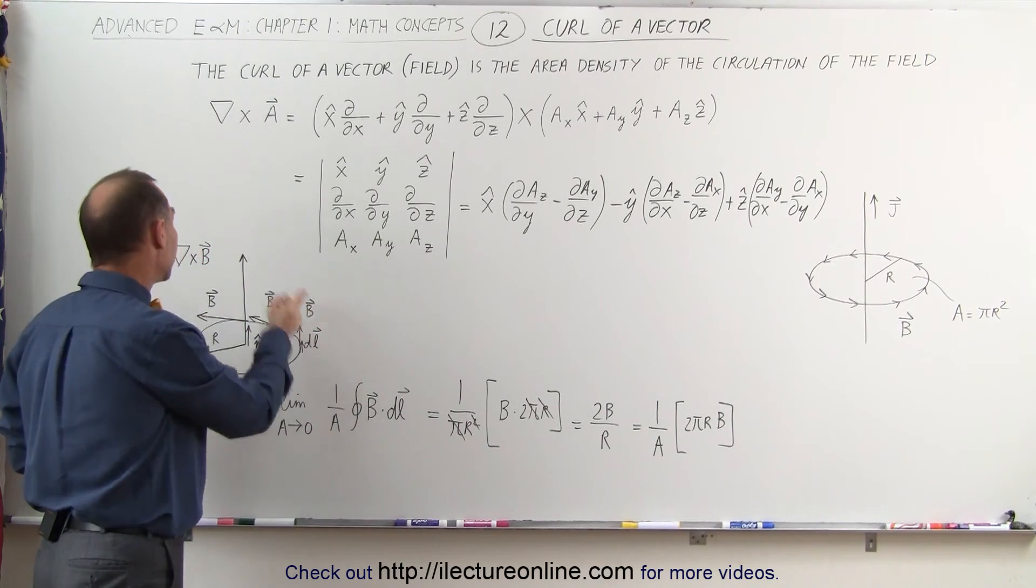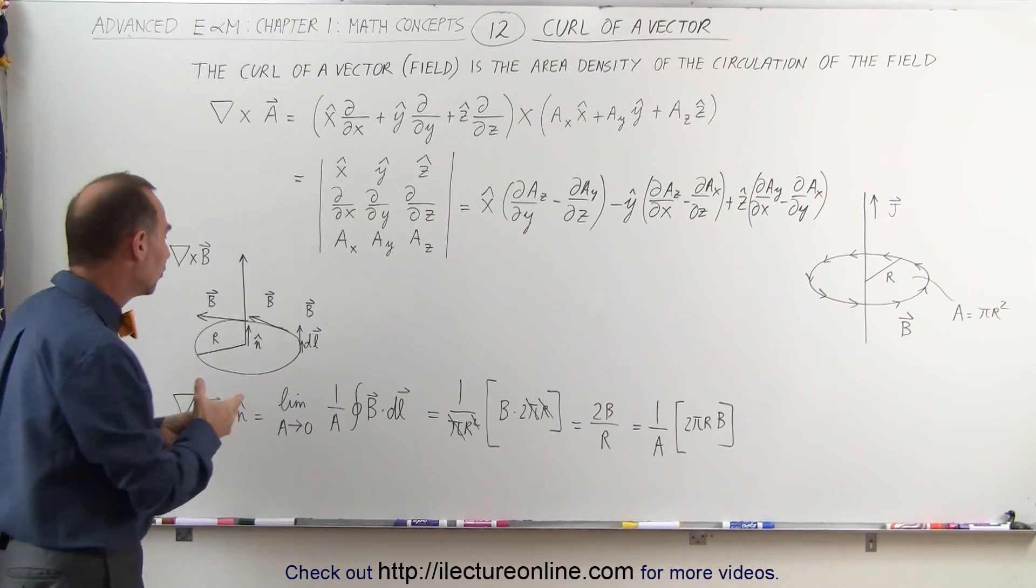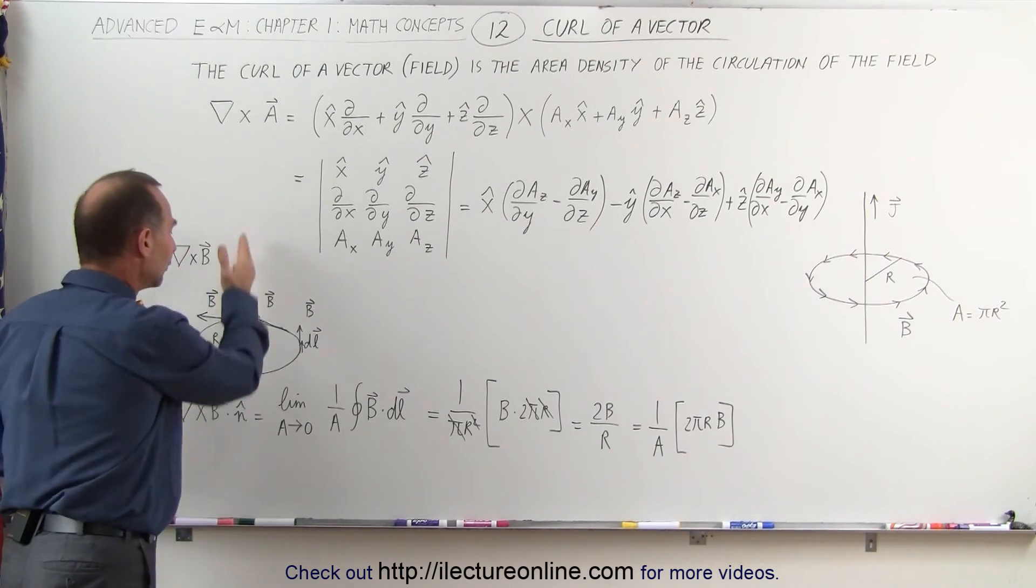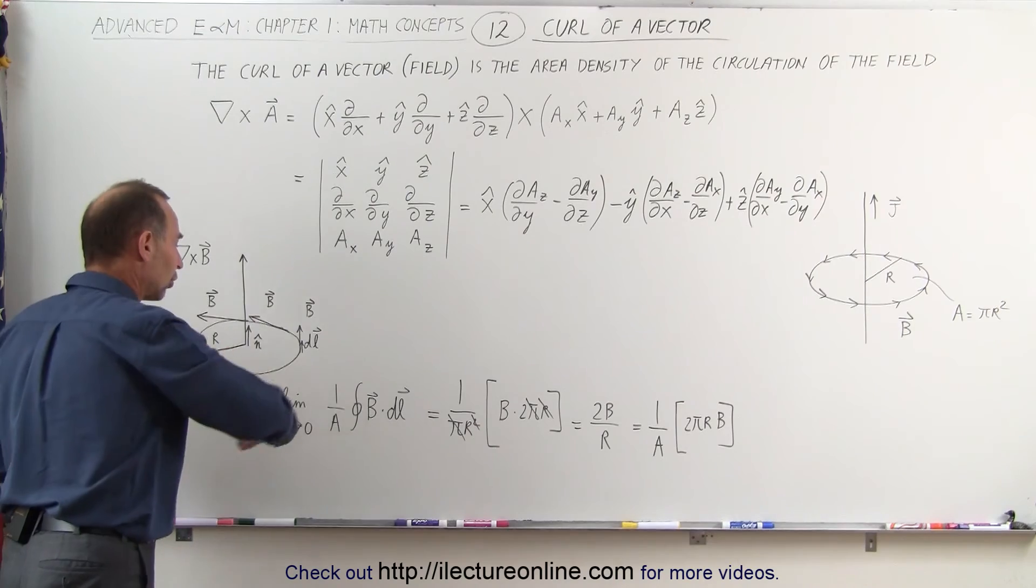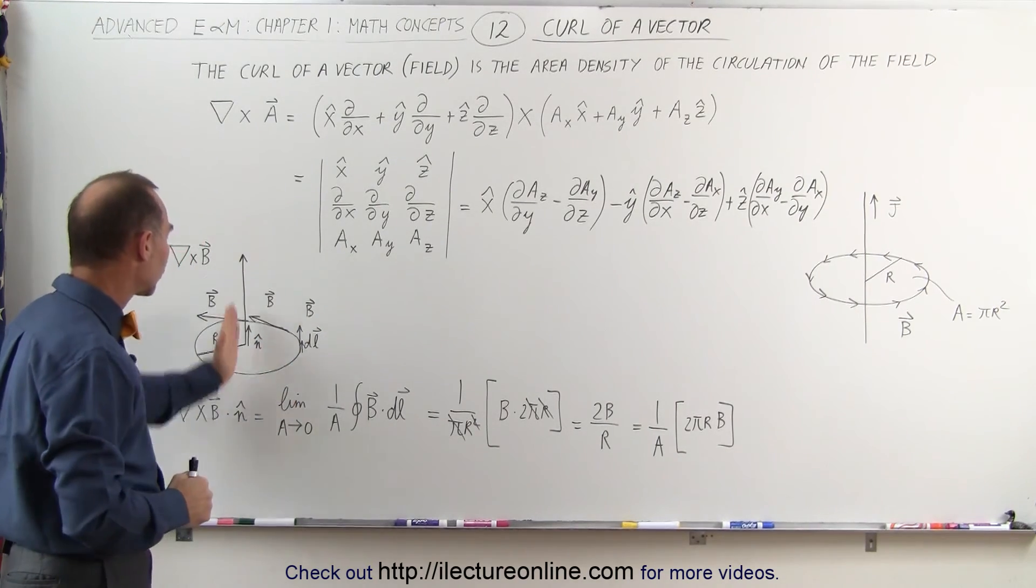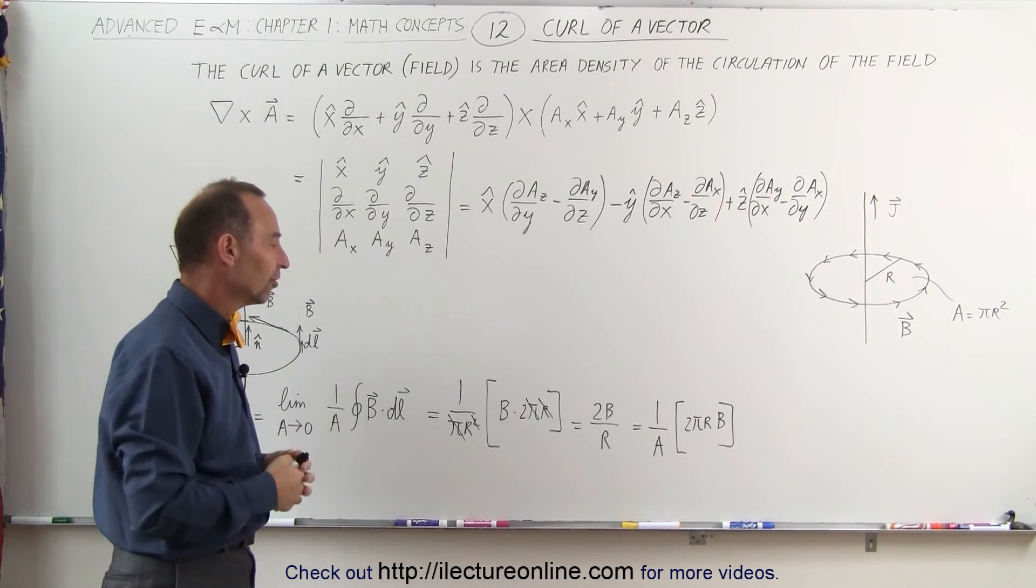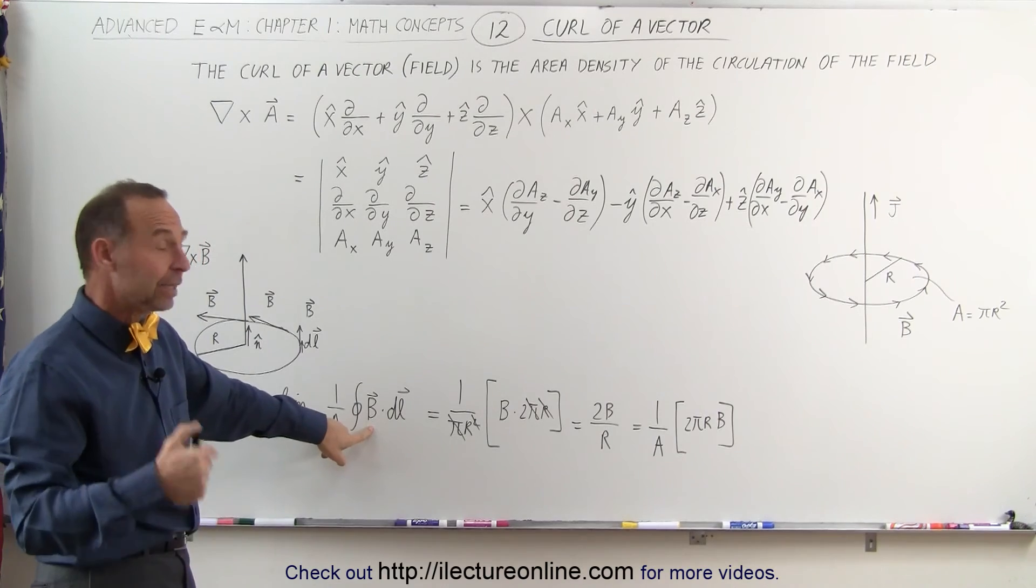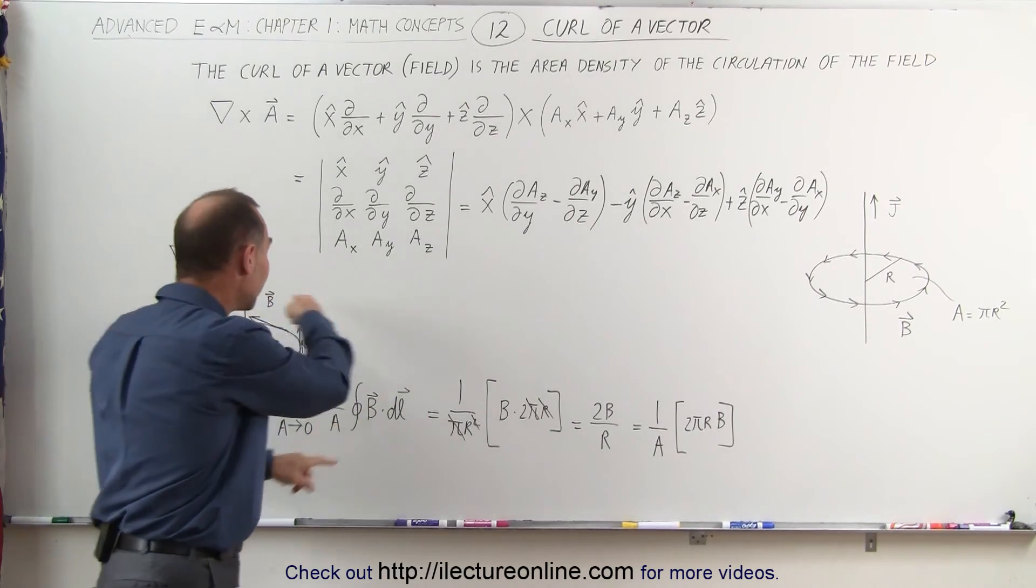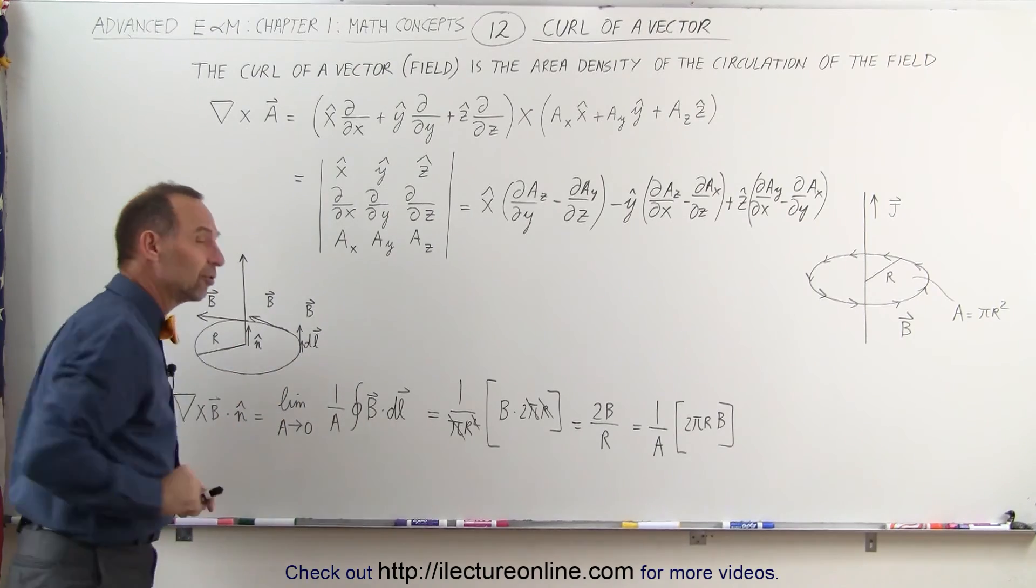If you double the strength of the magnetic field, you will double the strength of the curl, and the curl then represents the current or the current density that's encircled by the magnetic field. So that's where the relationship comes in between the current density, which is considered the curl of the magnetic field, and the curl itself, which can be defined as a magnetic field multiplied times the distance as you go around the path, divided by the area of that cross-sectional path.